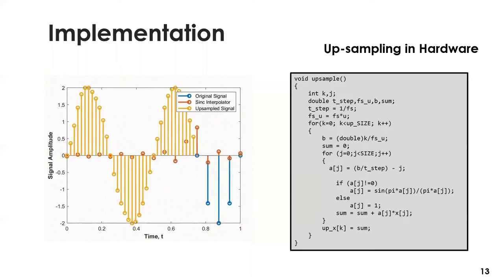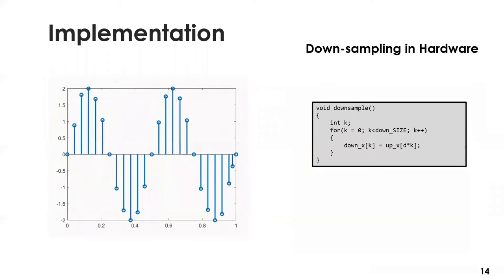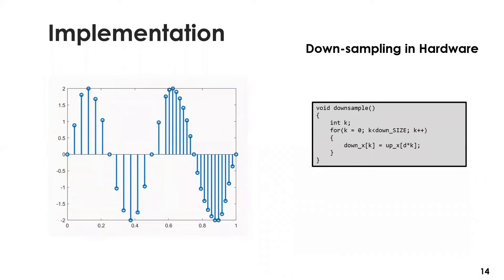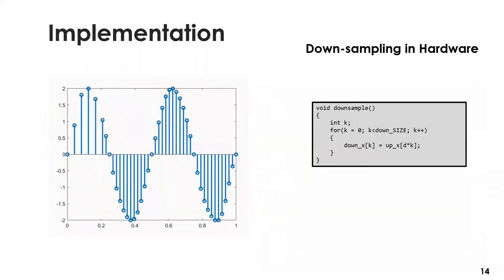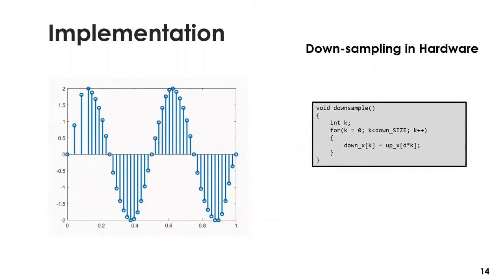The function for upsampling is shown on the right. Downsampling refers to removing samples at a periodic interval from the upsampled signal. In the animation on the left, we can see the downsampling operation being performed on the upsampled signal to get the final resampled signal. The function for downsampling is also shown on the right.